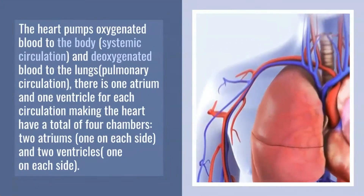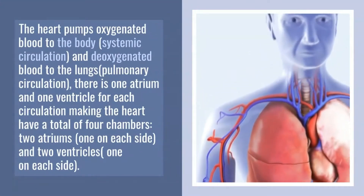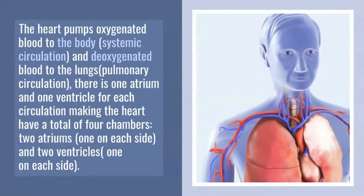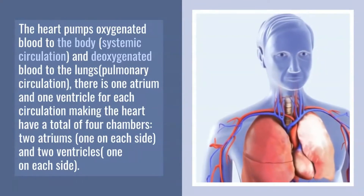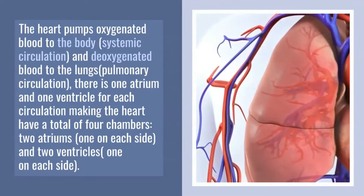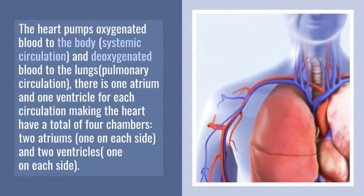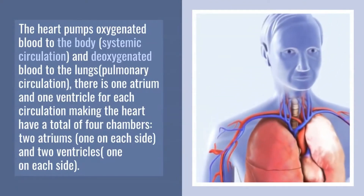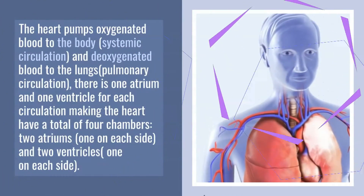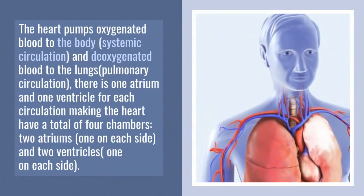The heart pumps oxygenated blood to the body through systemic circulation, and deoxygenated blood to the lungs through pulmonary circulation. There is one atrium and one ventricle for each circulation, making the heart have a total of four chambers: two atriums, one on each side, and two ventricles, one on each side.